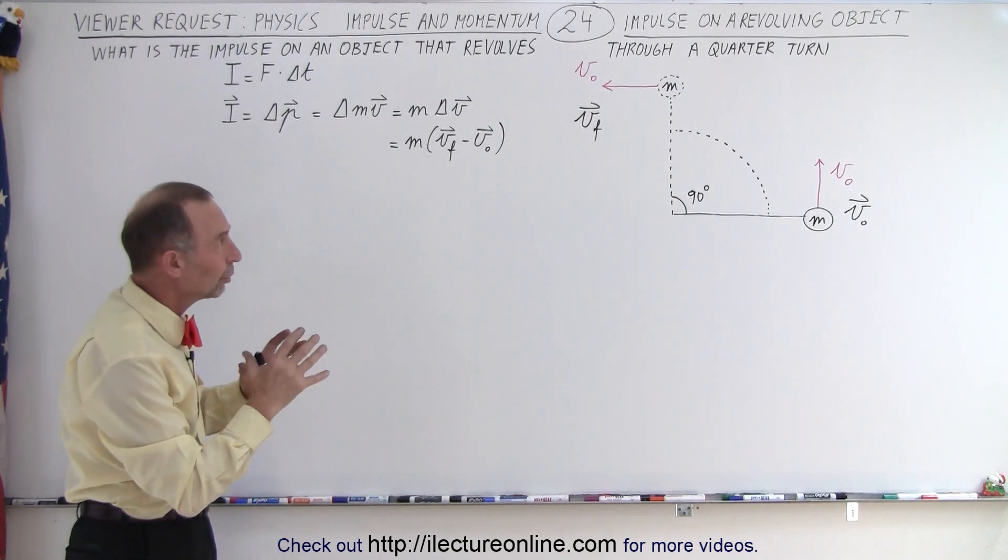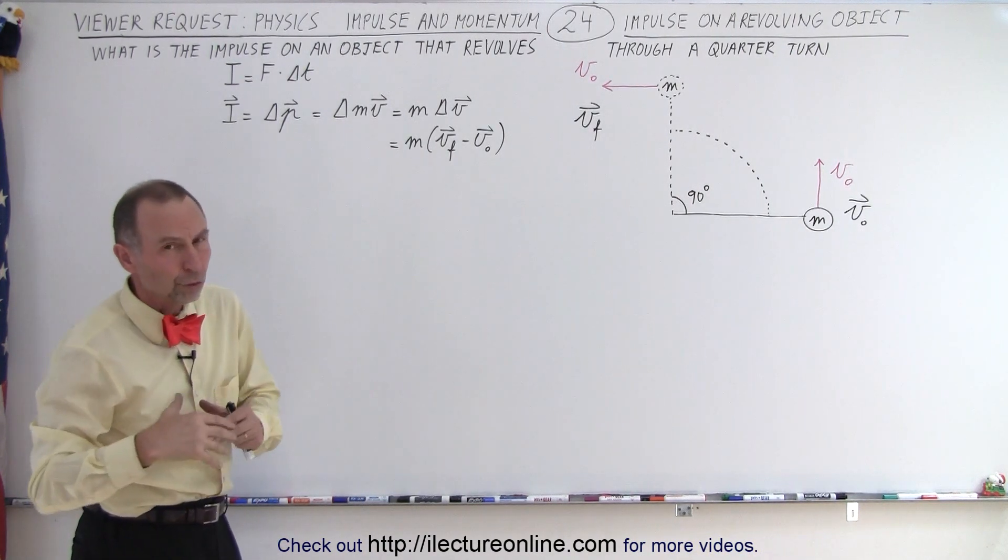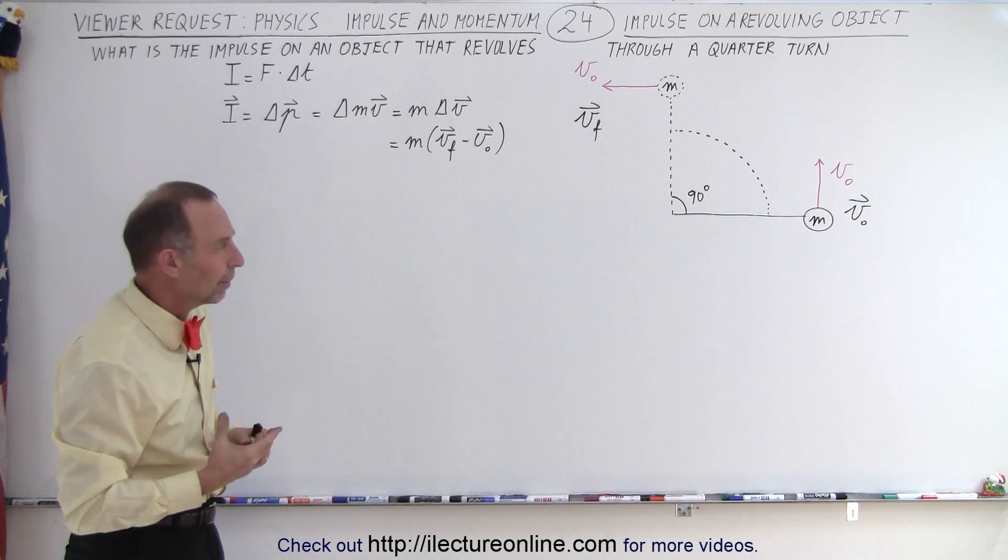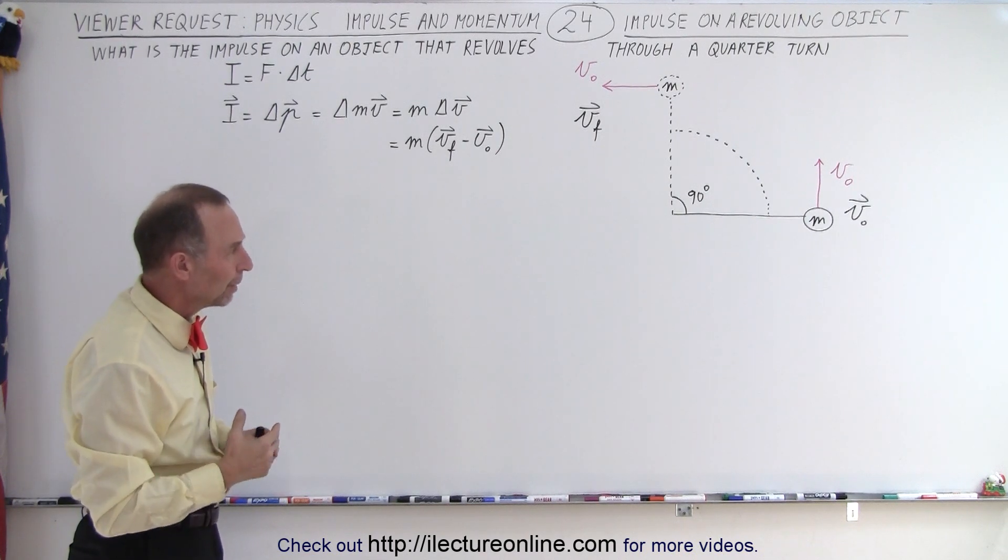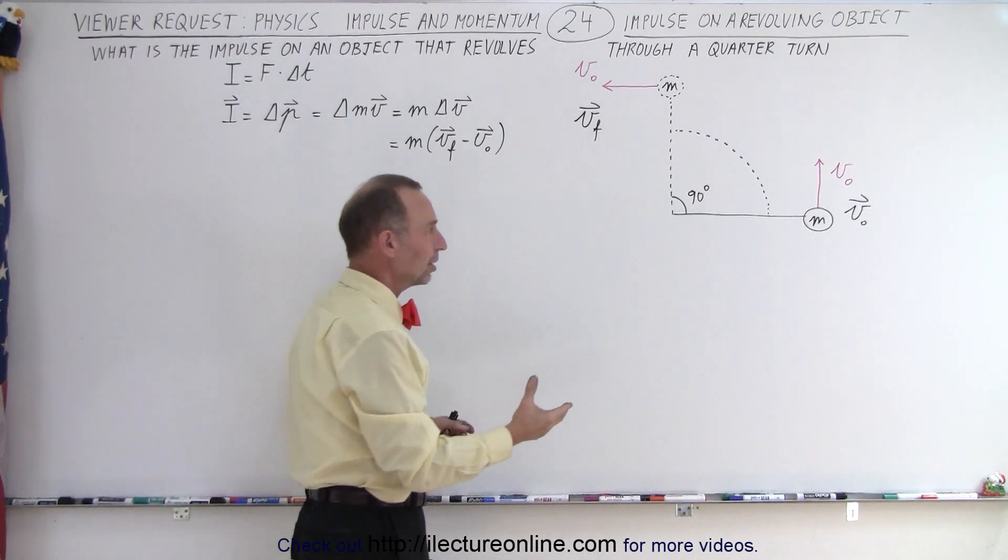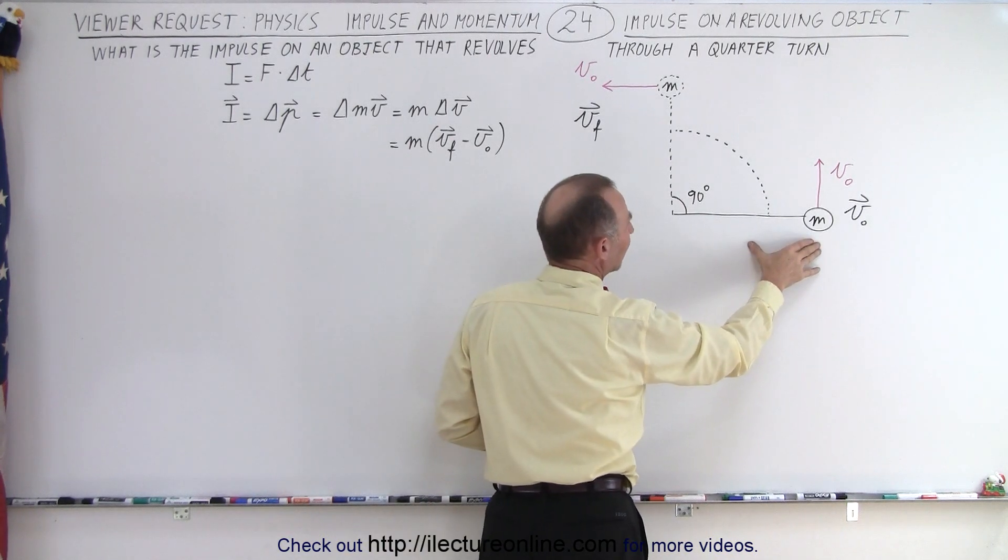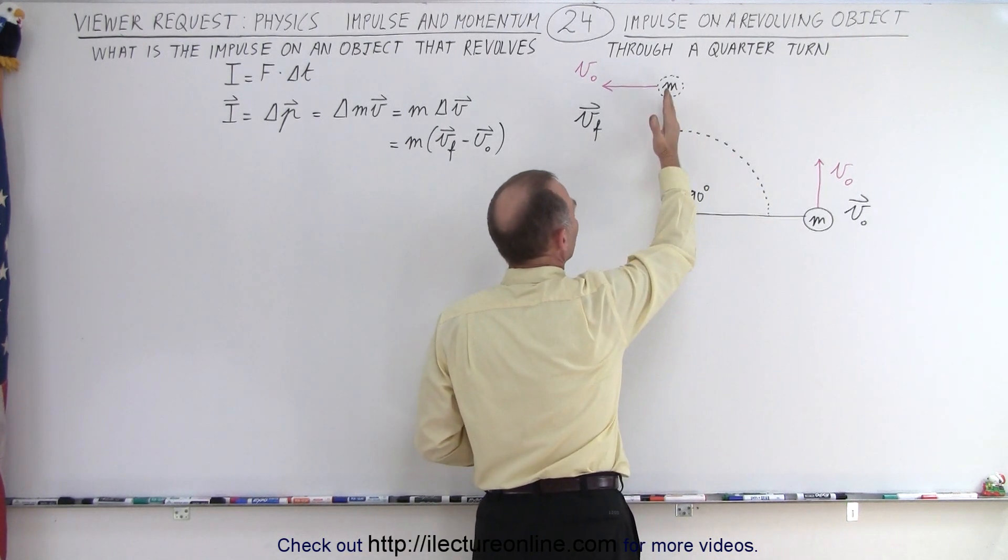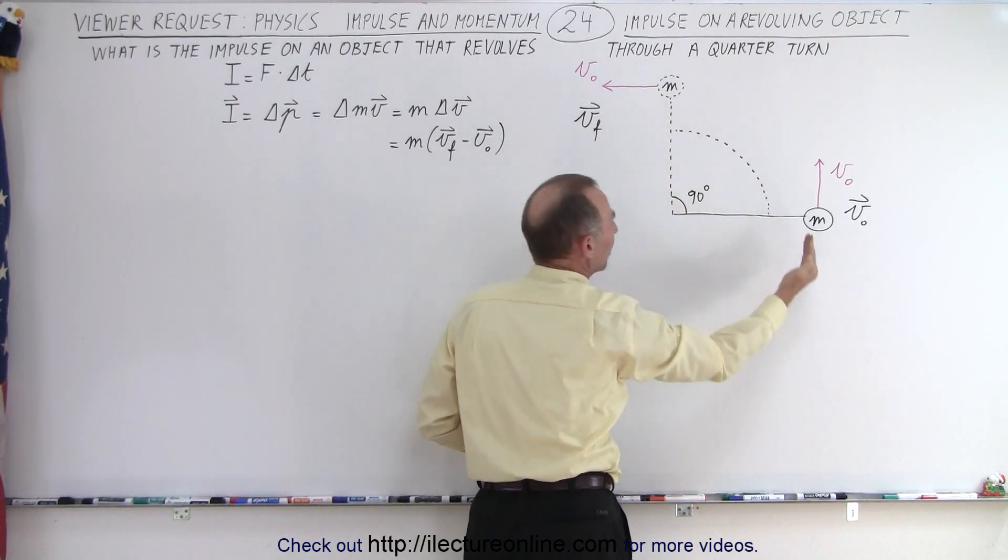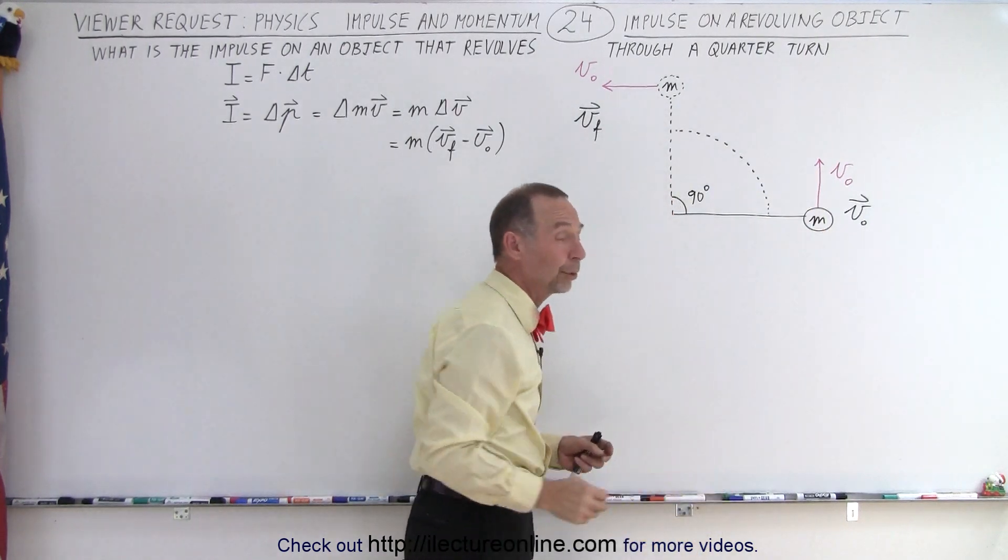Now we're taking a simplistic look at this. We're going to do a more general approach on the later video. But here, let's assume that we start in this particular location, and then a quarter turn later the object is up here, moving to the left, where here the object is moving upward.